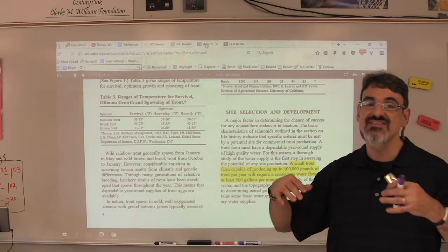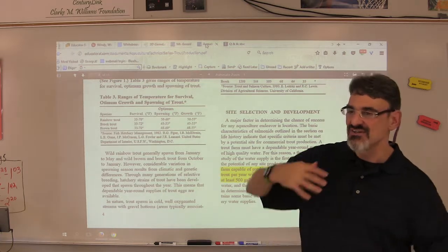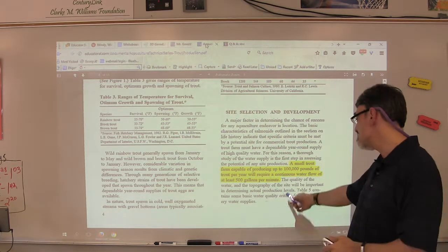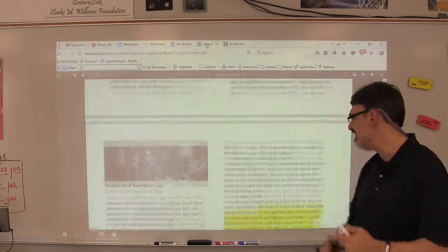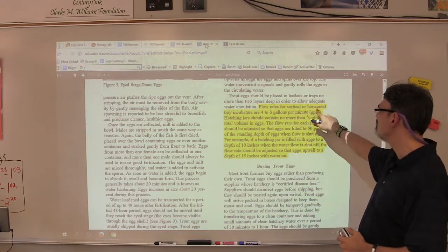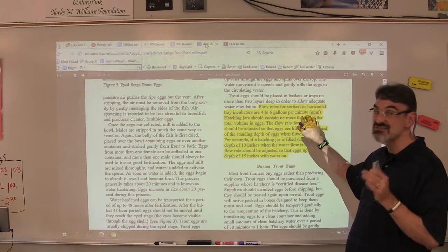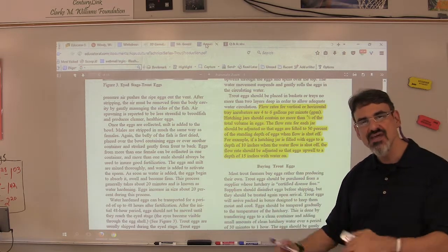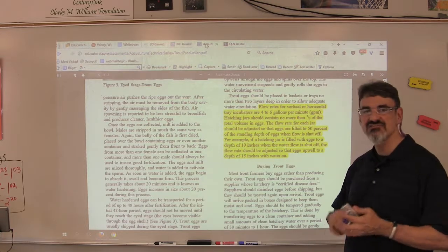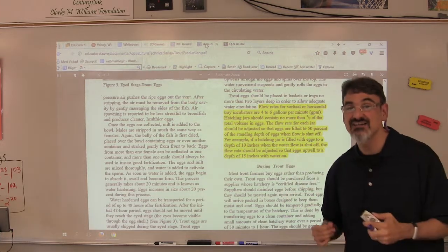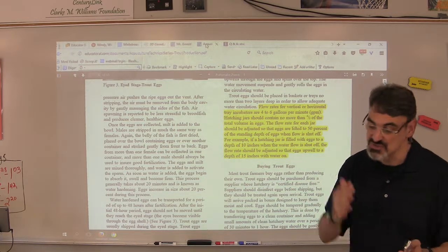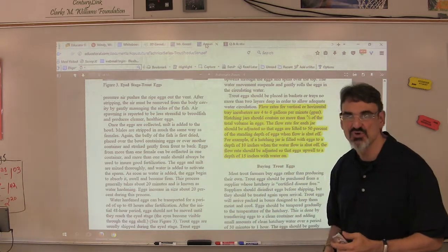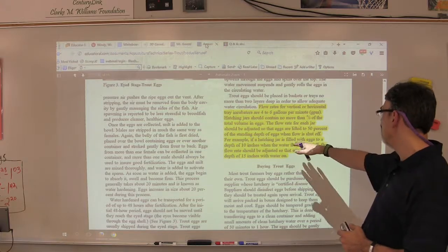That's per minute, but that's a hatchery where they're standing still, not in a creek. Ours was 300 per second—that's a lot more water. This is a hatchery; I just want you to get perspective. Flow rates for vertical or horizontal tray incubators are four to six gallons per minute. In a hatchery, the water is moving very slowly with very little of it, just enough to keep them aerated with dissolved oxygen and to keep the water moving and cold.